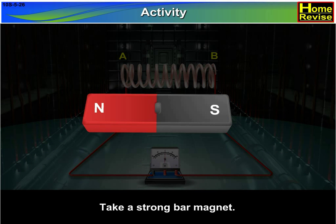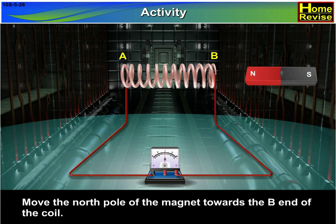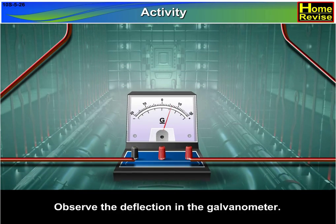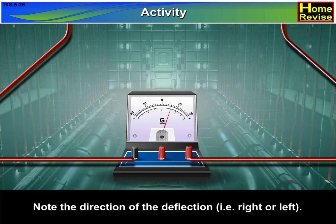Take a bar magnet. Move the north pole of the magnet towards the B end of the coil. Observe the deflection in the galvanometer. Note the direction of the deflection, that is right or left.